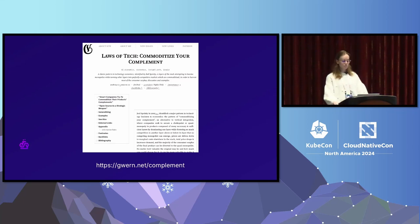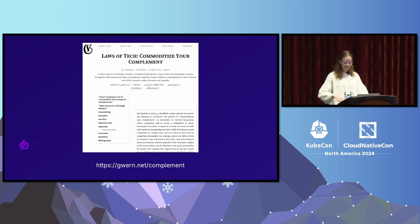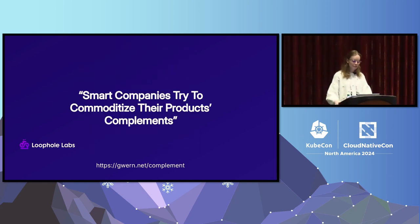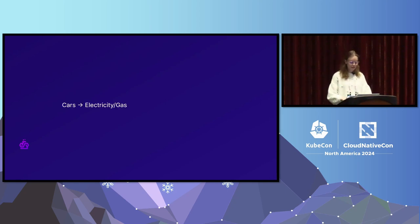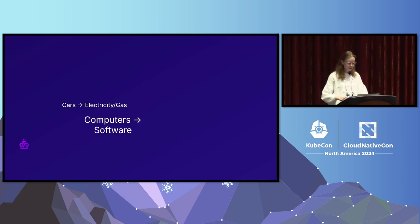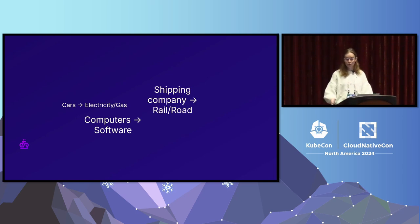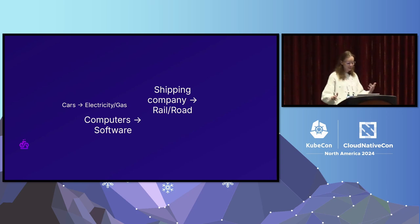There's an interesting article on HN called 'Commoditize Your Complement.' The fundamental proposal is that smart companies try to commoditize their products' complements. A complement is something your product requires to function — for example, a car's complement is electricity or gas, physical computers need software, and a shipping company needs roads or rail. Without the complement, the product is useless.